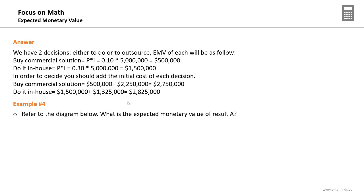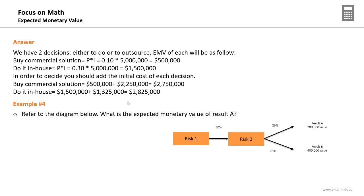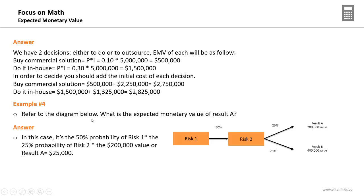Another example: what is the EMV of Result A? Result A has a $200,000 impact and 25% probability — but the trick is you must also consider the 50% probability of reaching that branch previously. So to reach Result A: 50% × 25% = 12.5% combined probability. The EMV = 50% × 25% × $200,000 = $25,000 USD.